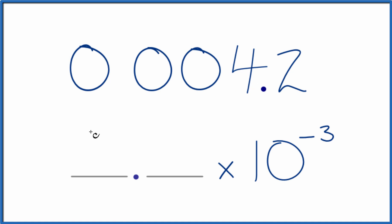And we'll put our whole number here, 4 and our 2 right here. And when we convert the decimal 0.0042 to scientific notation, we get 4.2 times 10 to the negative third.